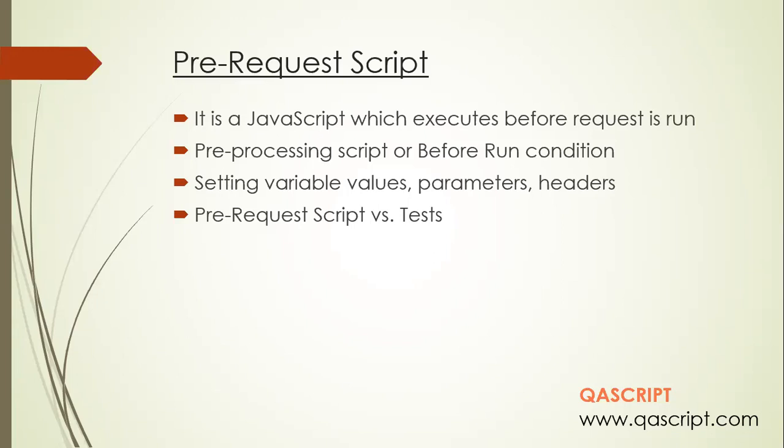Generally speaking, a pre-request script is nothing but JavaScript. Whatever you write in a pre-request script is written in JavaScript, and its major functionality is that it works like a pre-condition for your API request. Whatever you write inside the pre-request script executes before your request is actually run. You can also call it a pre-processing script or a before-run condition. In many test frameworks like TestNG or JUnit, you have annotations like @Before and @After — these are pre-conditions and post-conditions. Pre-request script falls in the same category.